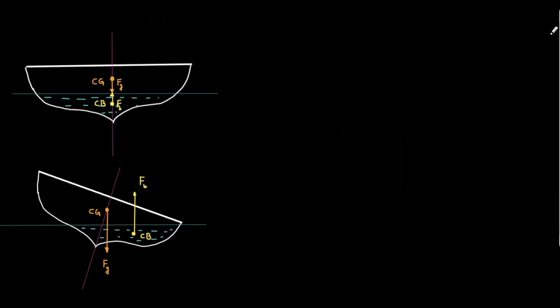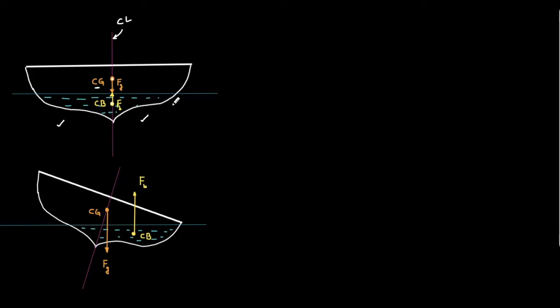Here I've taken a small boat floating horizontally. You can see the center of mass — this is the center of gravity. The submerged portion is symmetrically distributed on the left and right, so the center of buoyancy through which the entire buoyant force acts lies on the line of symmetry — the center line. This is on a calm water body.